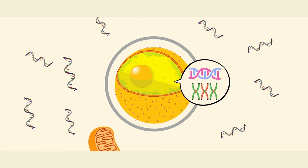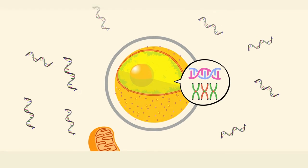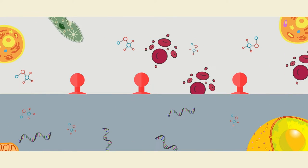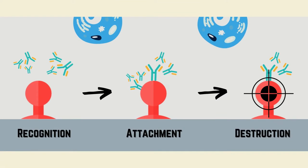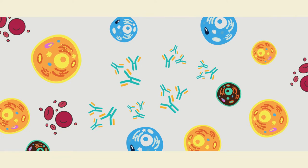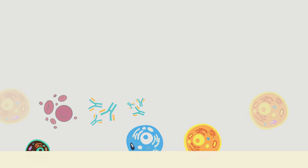mRNA from the vaccine does not enter the nucleus and does not alter DNA. The cell then presents the pieces of the spike protein on its surface as part of a normal immune response. The immune system recognizes that the spike protein is foreign and produces specialized antibodies. Antibodies help protect the body against infection by recognizing pathogens, attaching to them, and marking them for destruction. Once produced, antibodies remain in the body even after it has rid itself of the pathogen, so the immune system can quickly respond if exposed again.